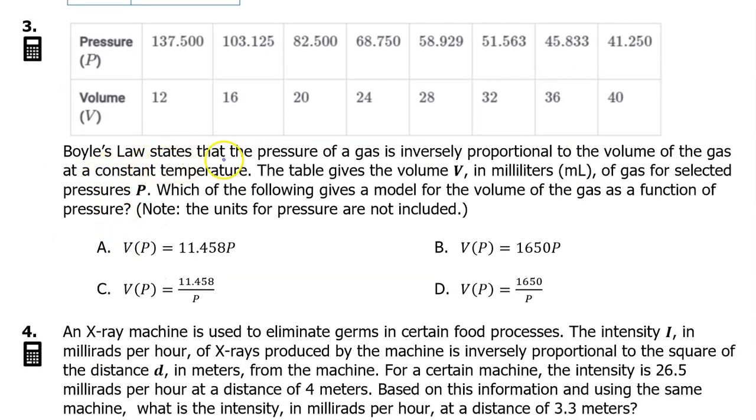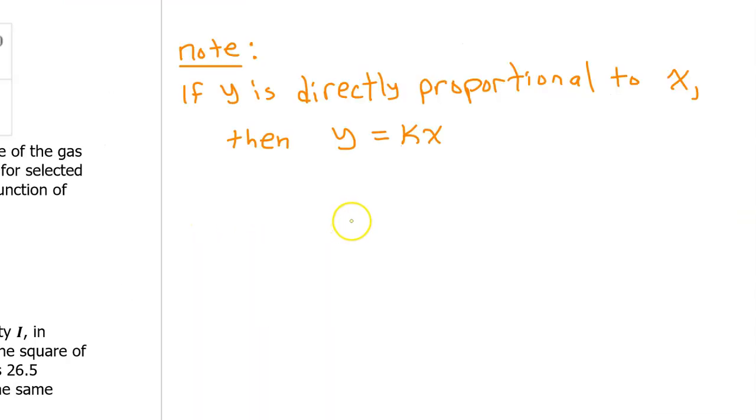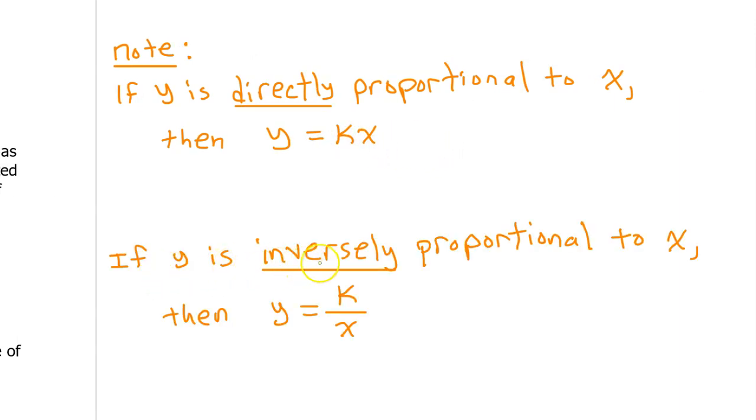Number 3. Boyle's Law states that the pressure of a gas is inversely proportional to the volume of the gas at a constant temperature. The table gives the volume, V, in milliliters, of gas for a selected pressure, P. Which of the following gives a model for the volume of the gas as a function of pressure? Note, if Y is directly proportional to X, then that means Y equals K times X, where K is a constant. If Y is inversely proportional to X, then Y is equal to K divided by X, where K is a constant.